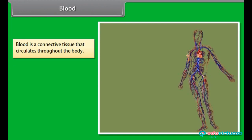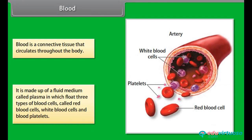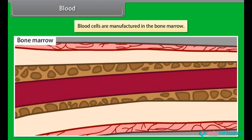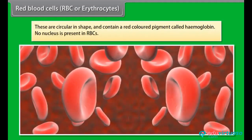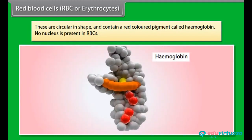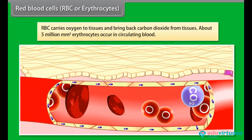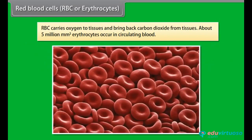Blood is a connective tissue that circulates throughout the body. It is made up of a fluid medium called plasma, in which float three types of blood cells: red blood cells, white blood cells and blood platelets. Blood cells are manufactured in the bone marrow. Red blood cells (RBCs or erythrocytes) are circular in shape and contain a red-colored pigment called hemoglobin. No nucleus is present in RBCs. RBCs carry oxygen to tissues and bring back carbon dioxide from tissues. About five million per mm³ erythrocytes occur in circulating blood.